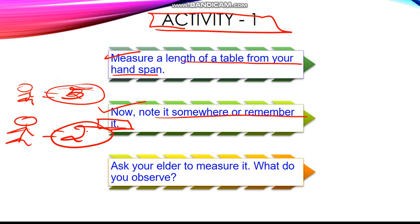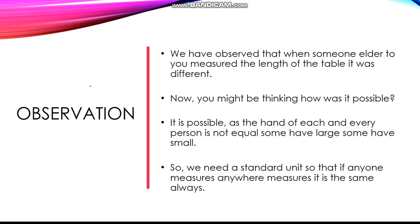Now, what do you observe? You observe that for the father, it's just two hand spans, but for you, it's five hand spans. Here is a complete explained observation.